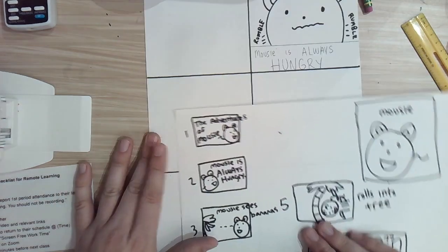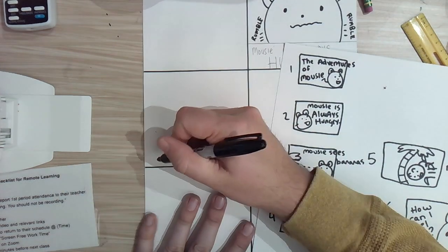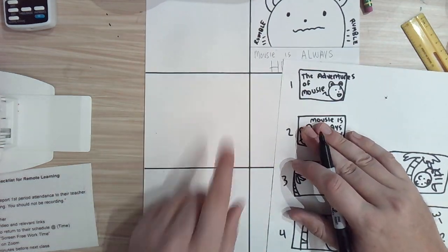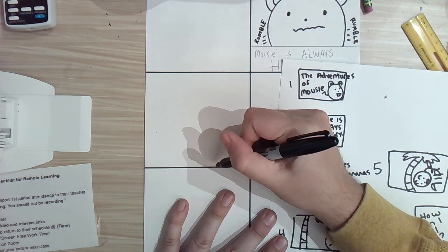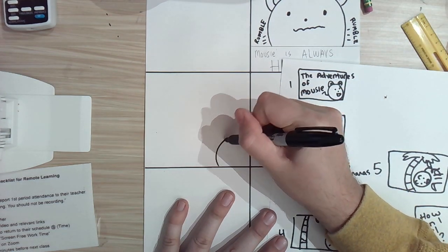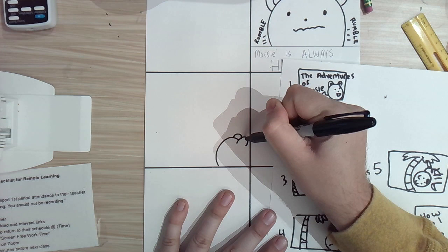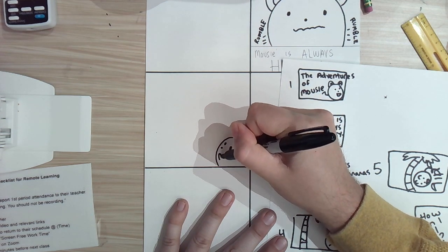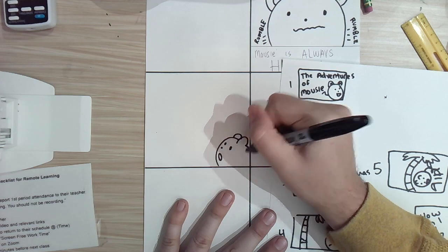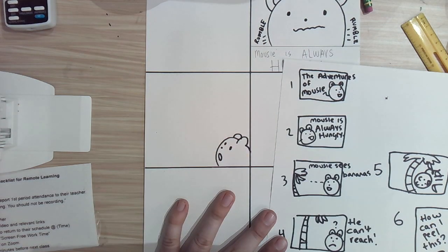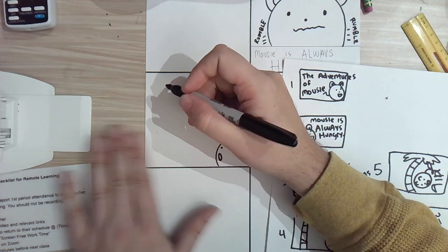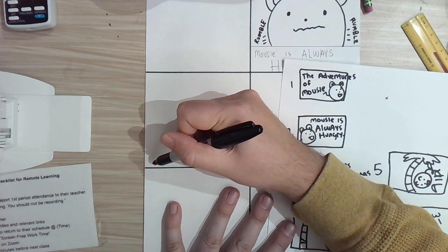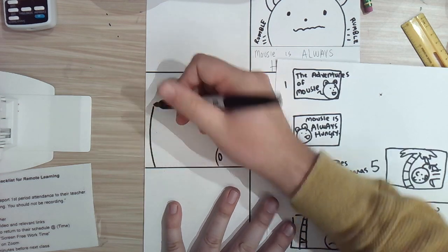My second panel, my mousey sees the banana. Now, he can't be this big because he needs to be looking up at a banana tree. So hopefully, I'm giving you guys some ideas for how this should be laid out. And yours is obviously different from mine. So I'm going to draw this banana tree.